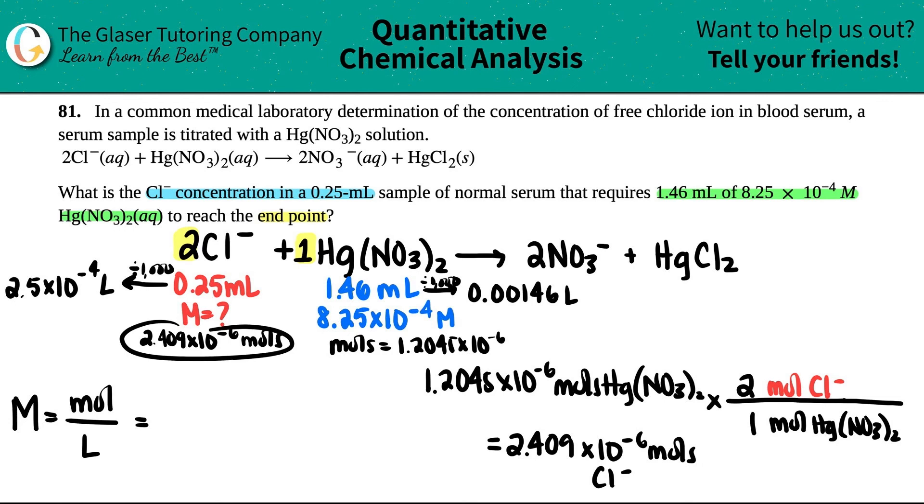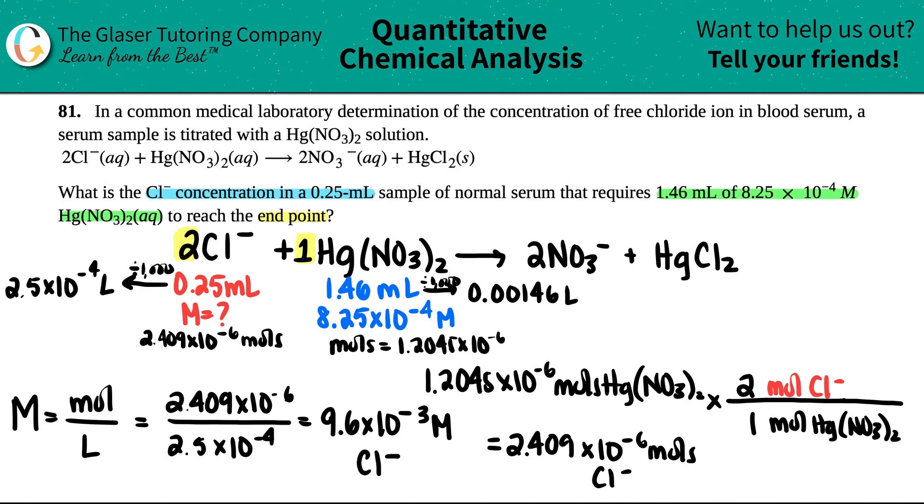So moles, which is what I just found out, 2.409 times 10 to the negative six divided by 2.5 times 10 to the negative fourth. Let's see what we get. I'm looking back at the answer - it looks like I have two sig figs here, three and three. So my answer should have technically two sig figs. This would be 9.6 times 10 to the negative three molarity. And that's of the Cl⁻ ion. That's it guys. There is your final answer. What's the concentration? 9.6 times 10 to the negative three molarity.